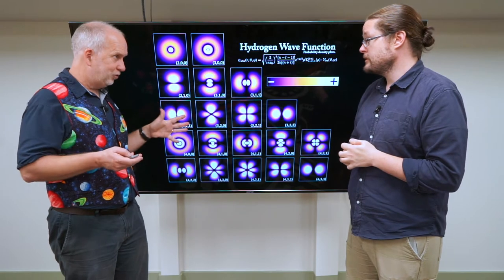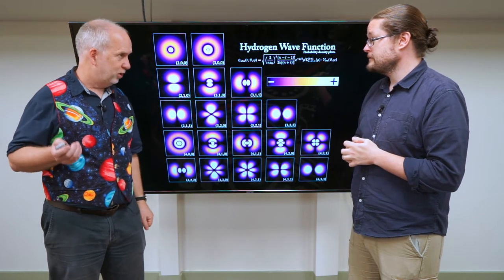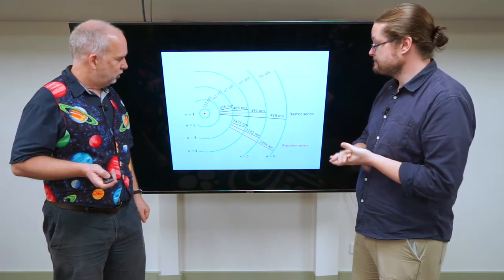Yeah, so electrons act as waves. They sit inside their trapped atom and that means they can only have certain energies. So you can draw an energy diagram.